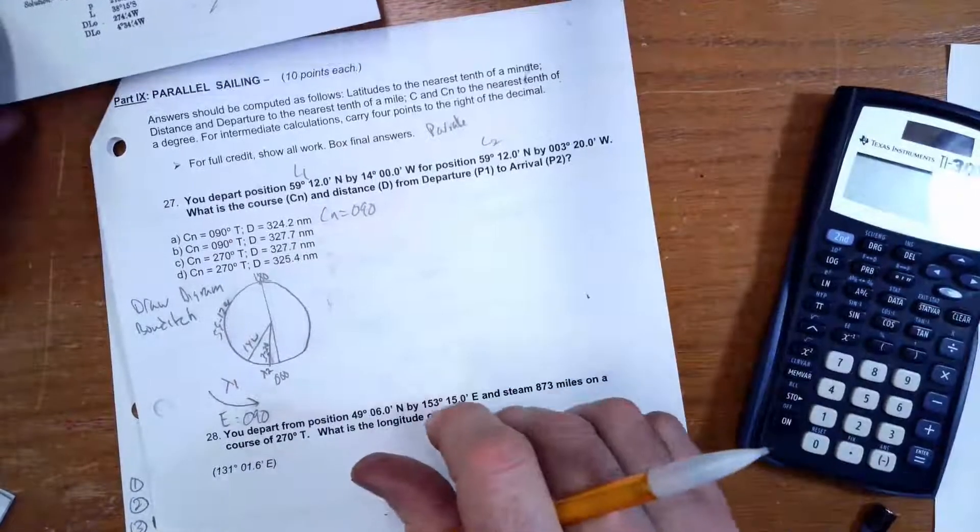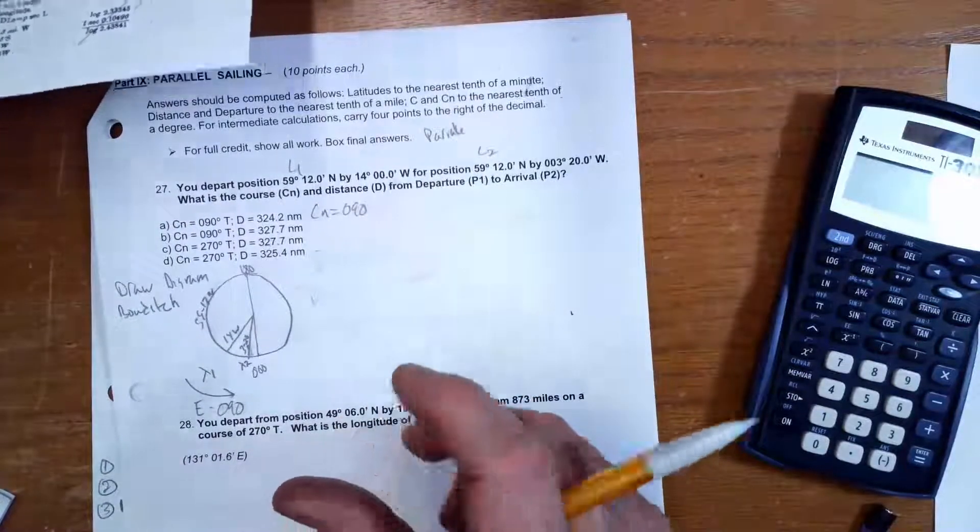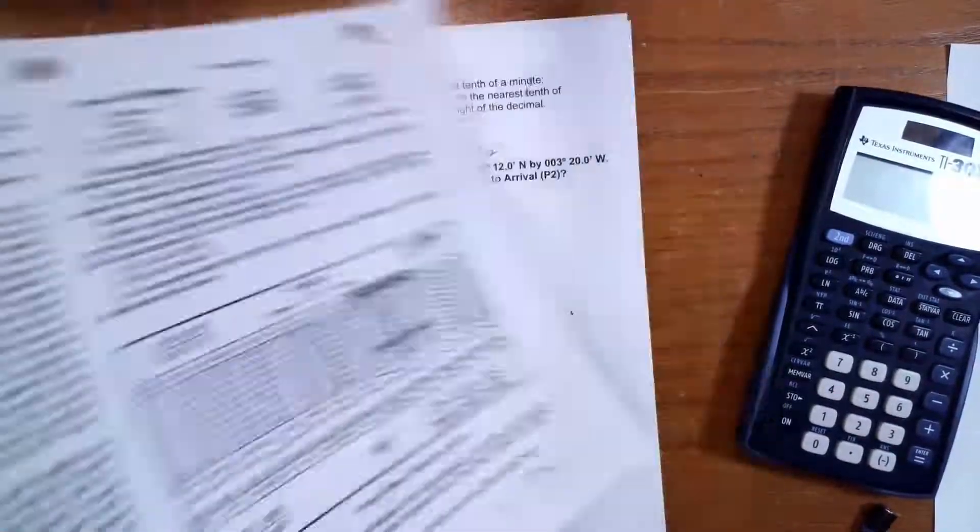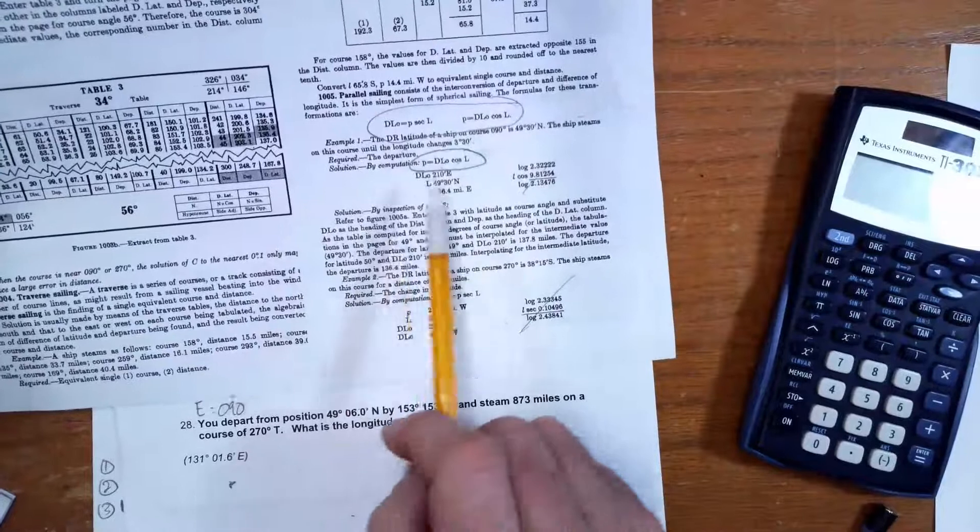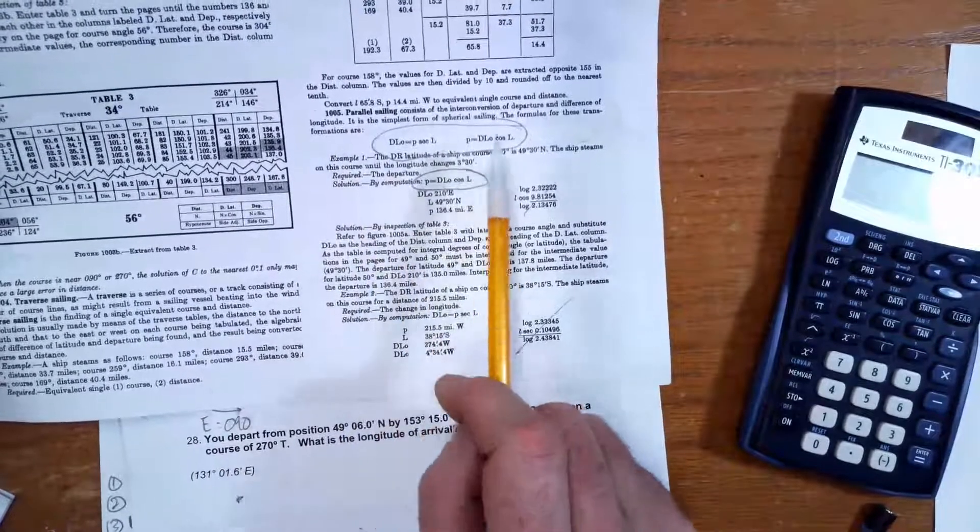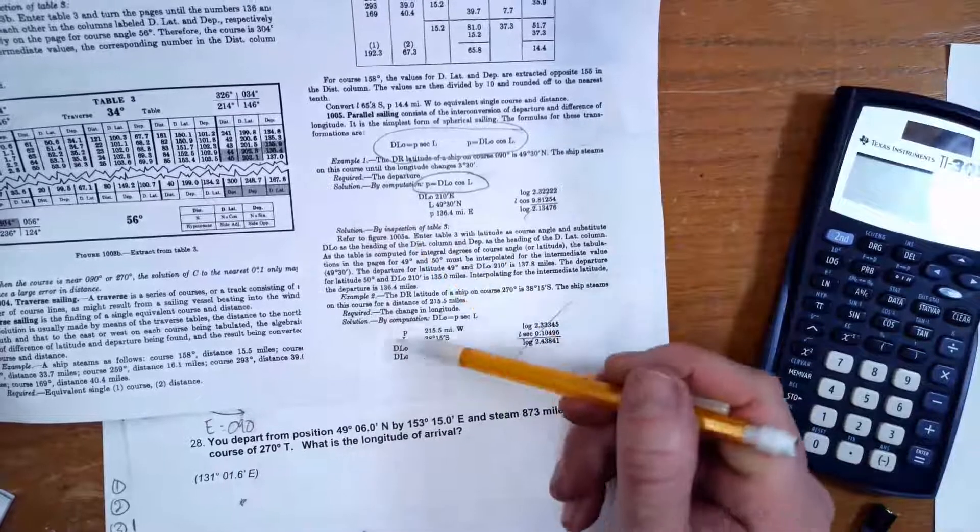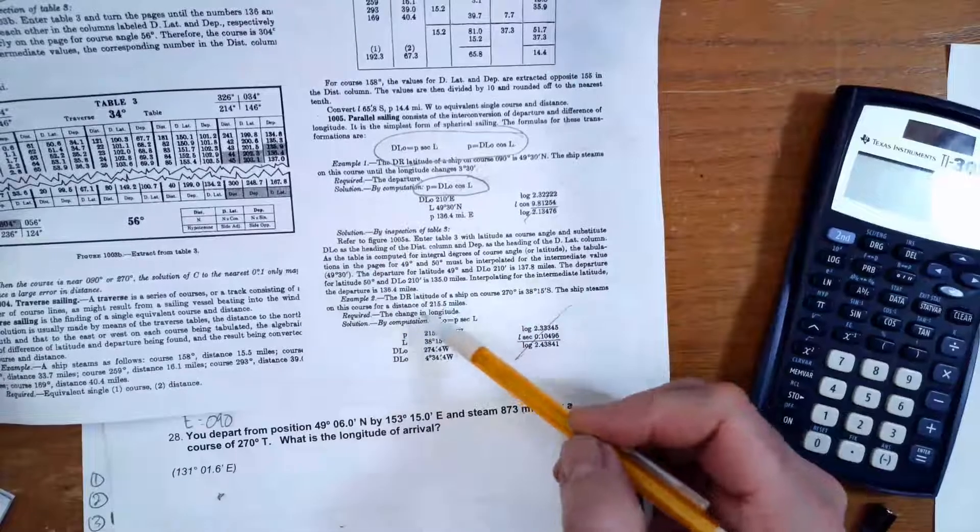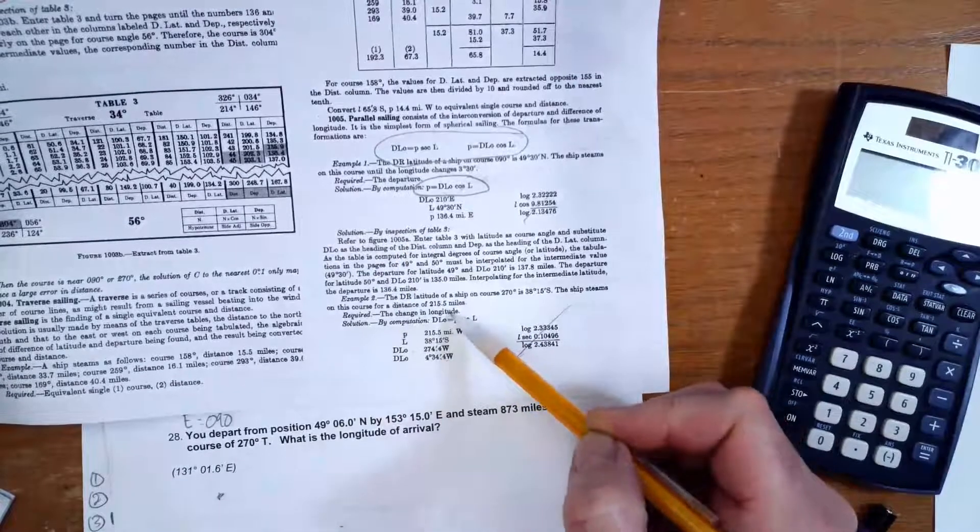Great, so now we want to see what formula we're going to use. We have been using Bowditch for the plane sailing, but we're going to flip this over now to find the parallel sailing. So here's parallel sailing, and there's two formulas. Here's example 1, find departure, and this is example 2, find change in longitude.